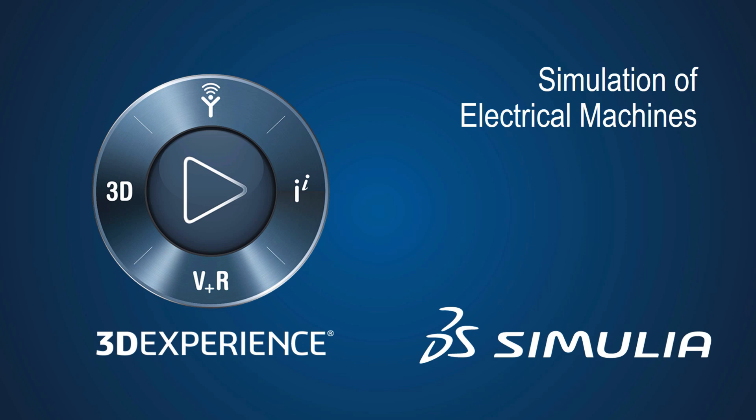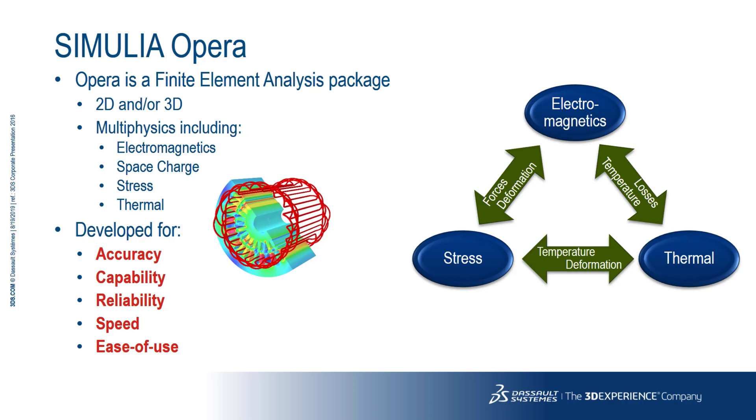Hello and welcome to this quick introduction to Simulia Opera software for simulating electrical machines. Simulia Opera is finite element analysis software available for problems in two or three dimensions. It's capable of multi-physics analyses with stress and thermal solvers available as well as the main function of electromagnetics. It's been in use for electrical machine design for over three decades. In this presentation we'll take a quick look at its capabilities as applied to the design of electrical machines.